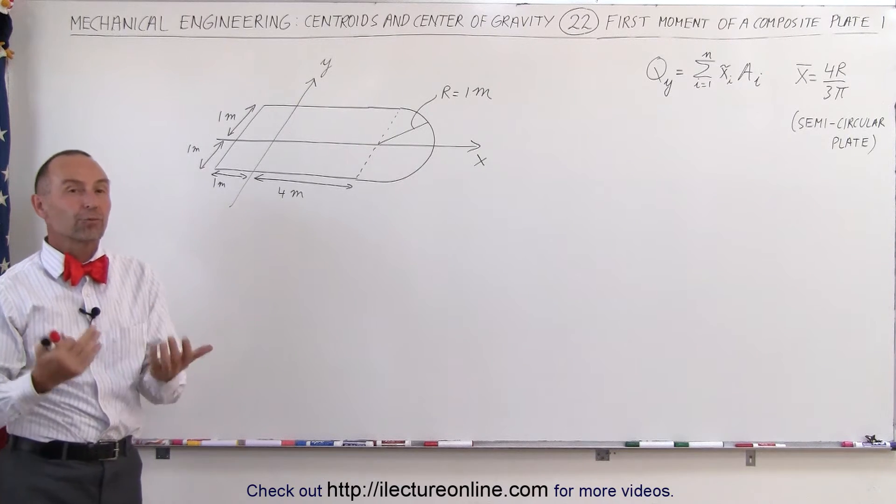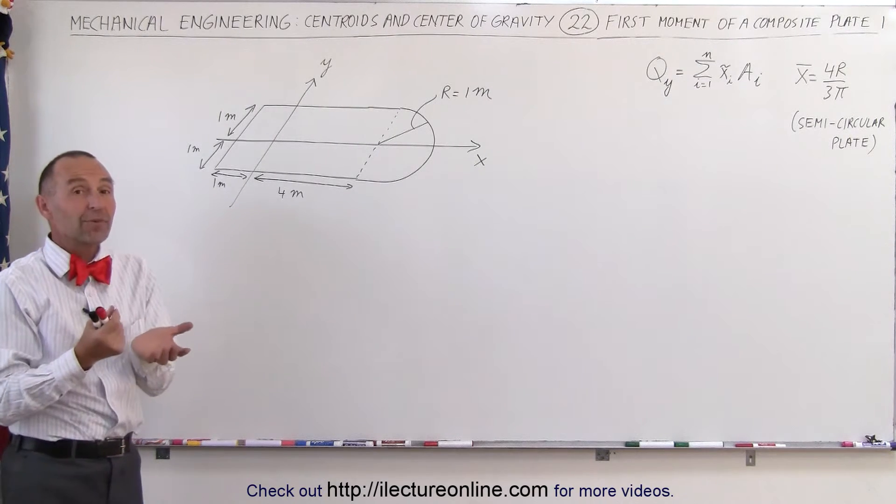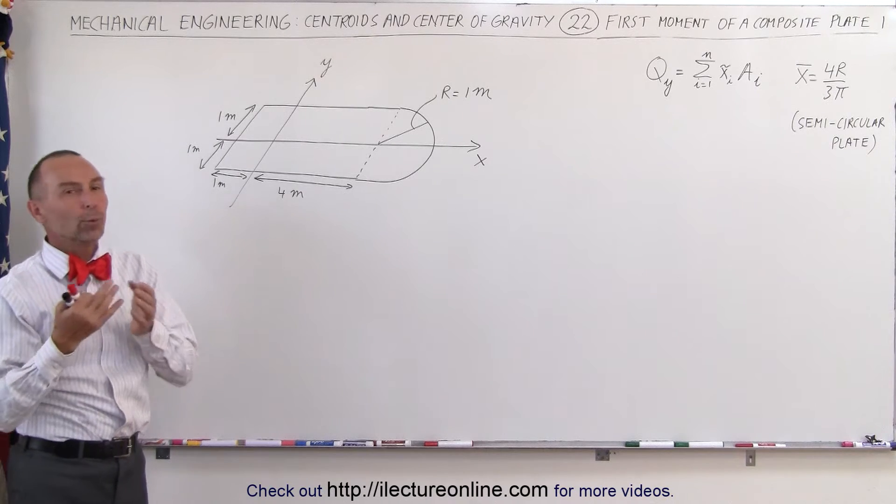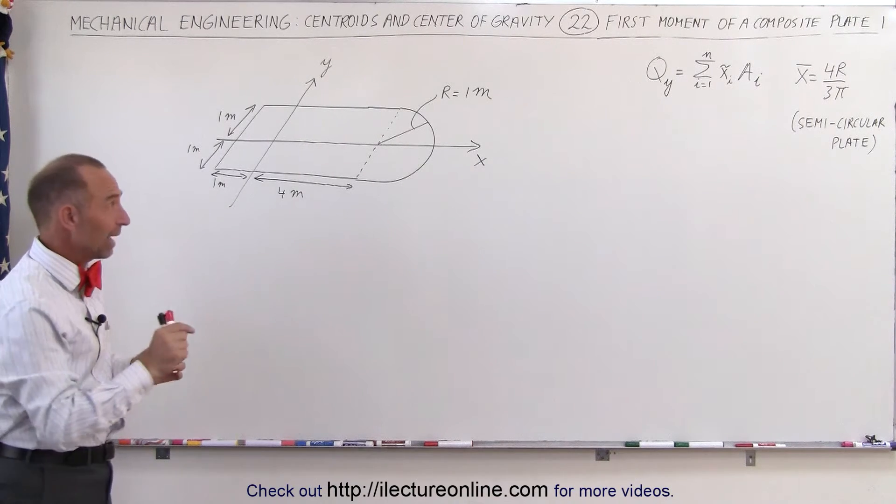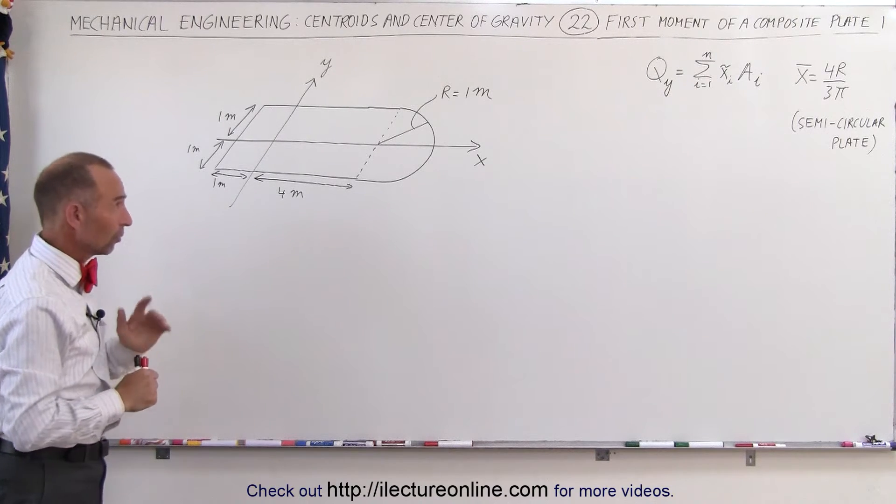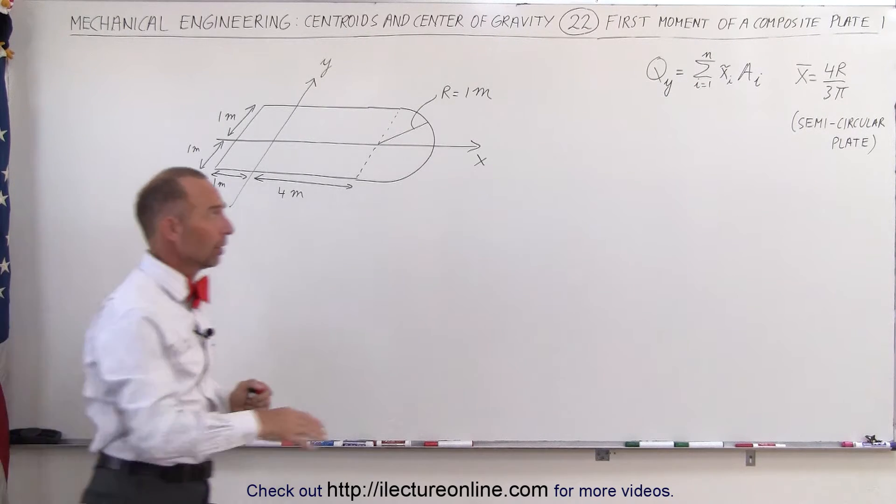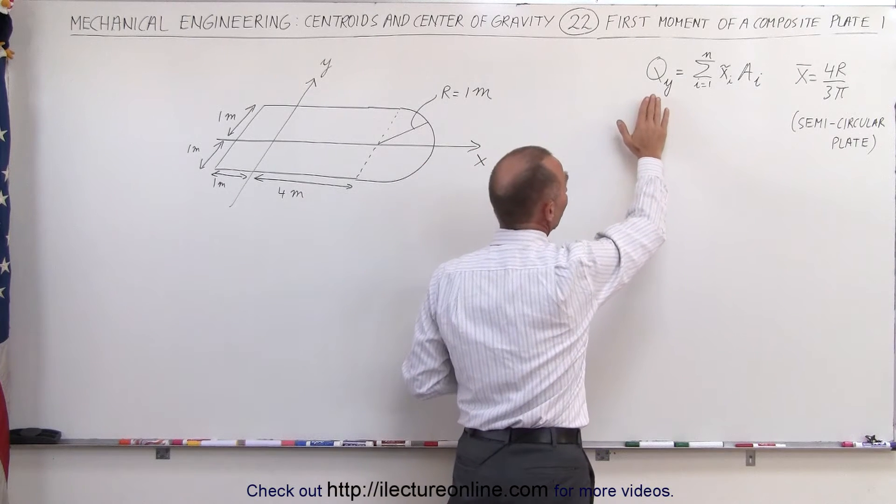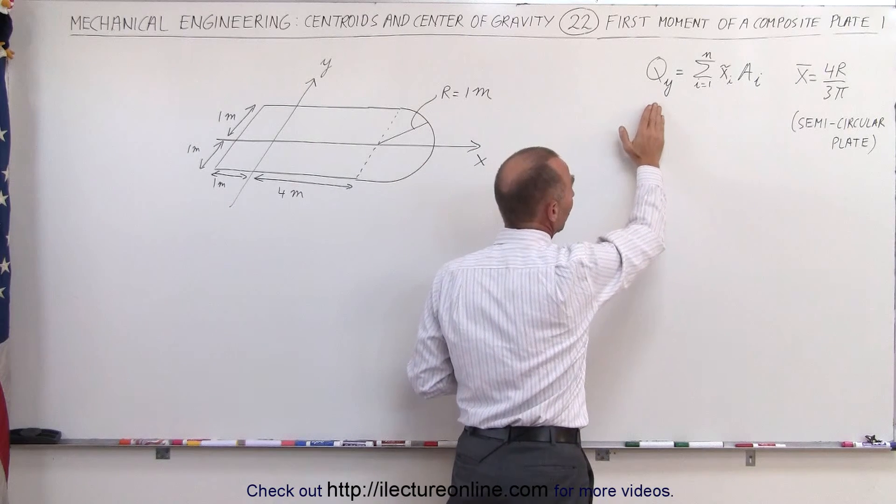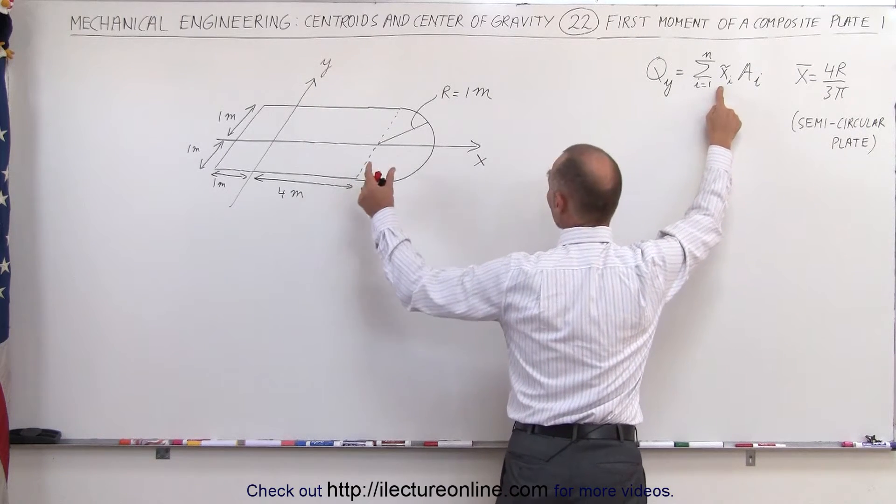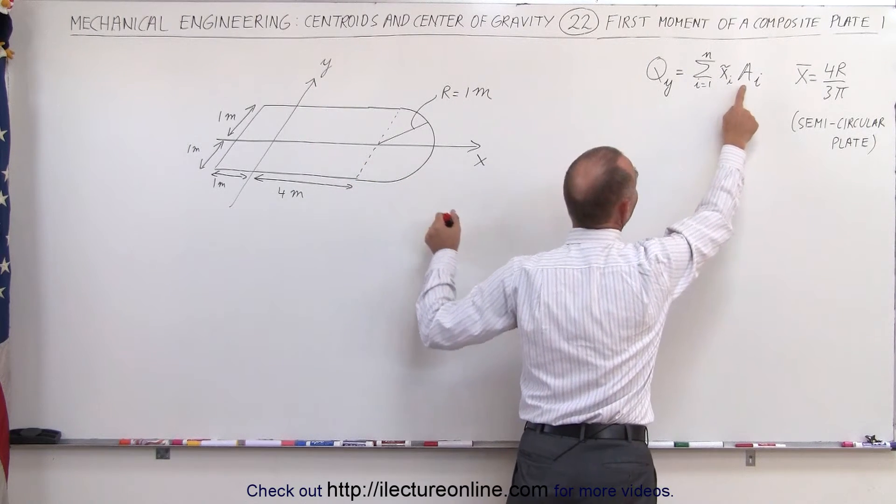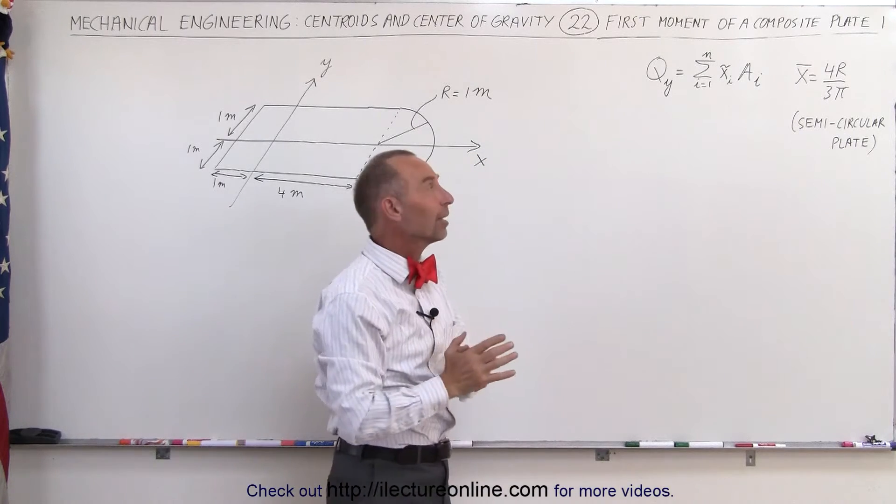When we find the first moment, even though it technically represents torque and weight, we use areas and distances from the origin to the center of mass. The equation says that we want to find the first moment about the y-axis. We sum up the x-coordinates of the individual pieces of the composite plate times the area of each of those plates and add it together.